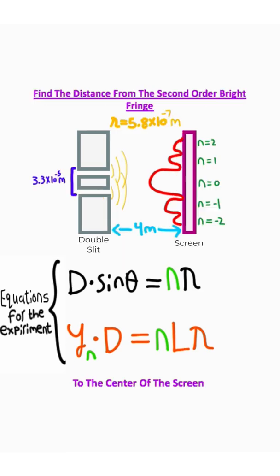So an example would be a problem like this, where let's say that we have our wavelength given to us, and by the way, this symbol here is lambda. It represents the wavelength. We need to find the distance from this bright fringe to the center of the screen. I'm going to go ahead and label that distance as y2 here.